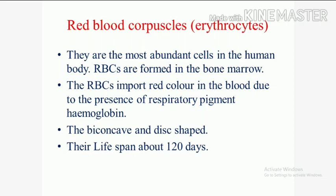Red blood corpuscles, otherwise called erythrocytes, are the most abundant cells in the human body. Large quantities of erythrocytes are present in the human body. Erythrocytes are formed in the bone marrow. The erythrocytes impart red color to the blood due to the presence of the respiratory pigment hemoglobin. The heme group can bind iron molecules, and these iron molecules bind oxygen. Red blood cells are red because of the interaction between iron and oxygen.